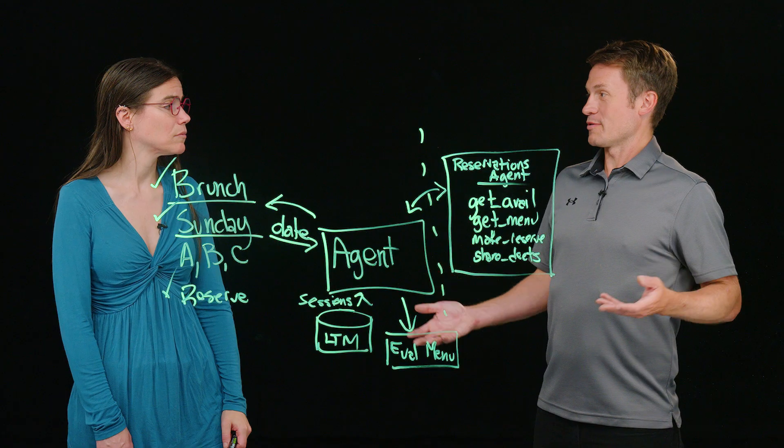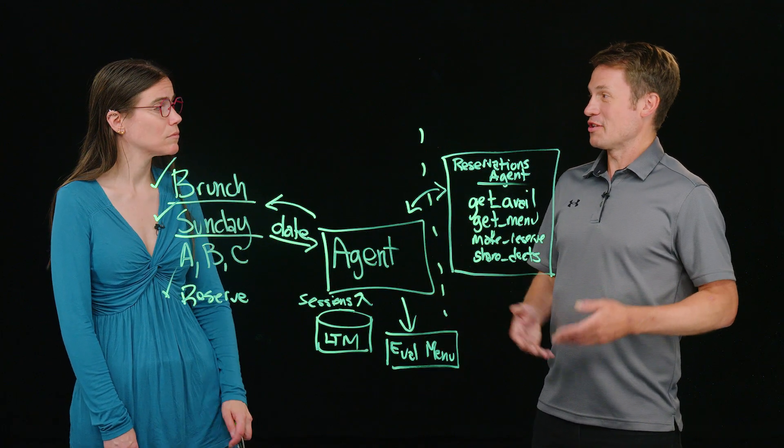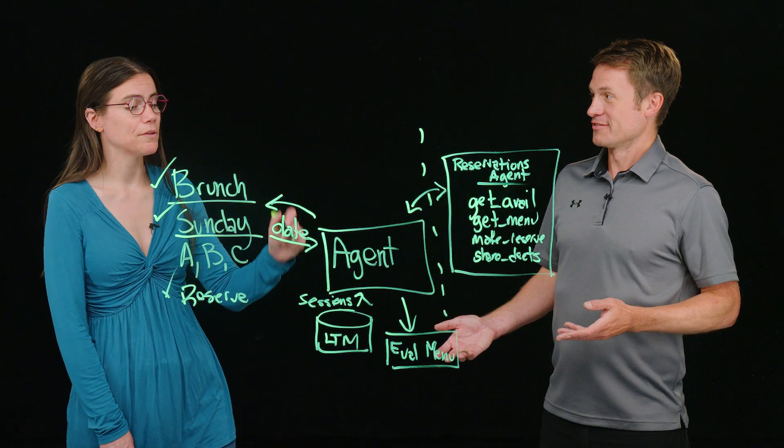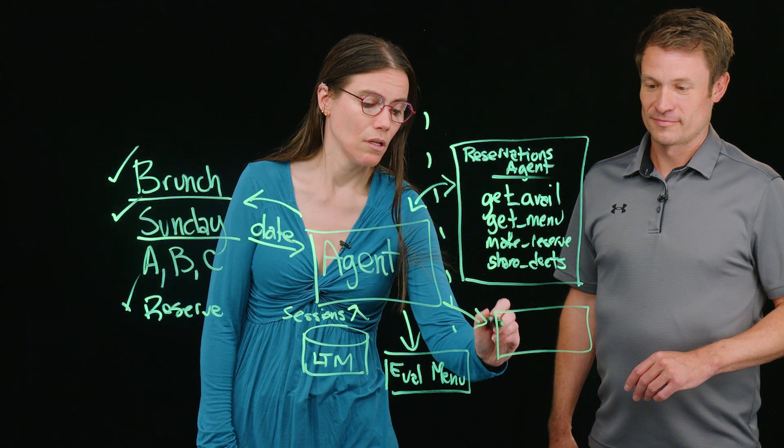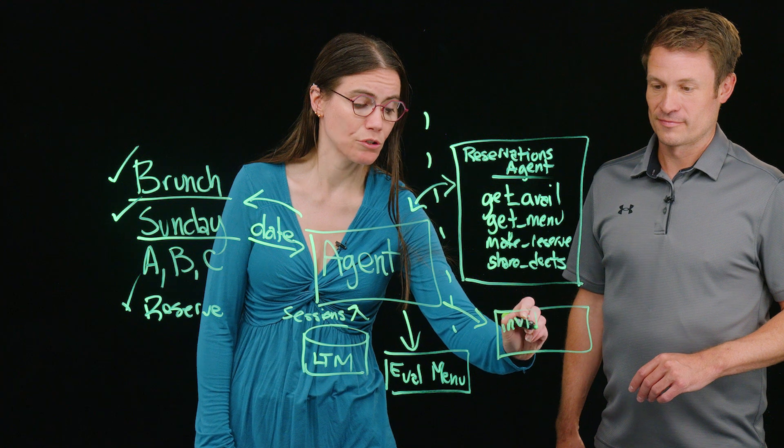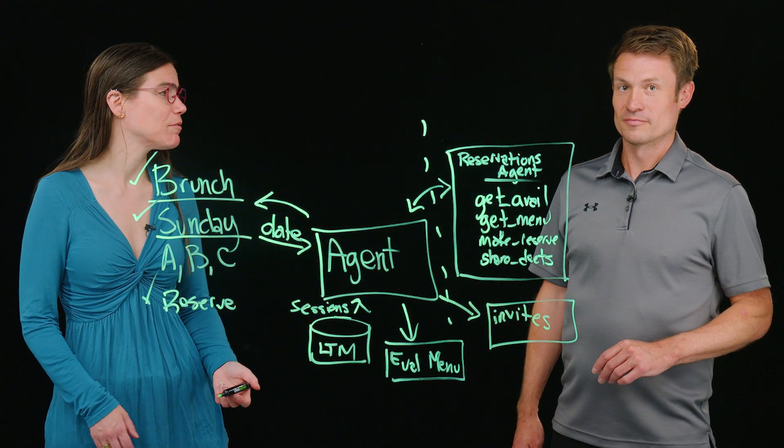All right, so the last but most important piece. We have three additional friends, but we haven't actually invited them to brunch. Right. So we need to give this a tool that can do invites. And one of the things we can use our long-term memory for is knowing the contact preferences of my friends.